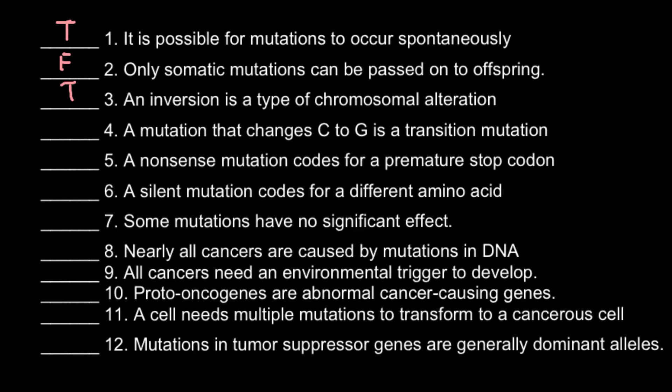A mutation that changes cytosine to guanine is a transition mutation — and this is false. Because cytosine belongs to the group of bases we call pyrimidines, and guanine belongs to the group we call purines. When we have a change in DNA sequence from purine to purine, we call this a transition. When we have a substitution of a pyrimidine with a purine or vice versa, we call this a transversion.